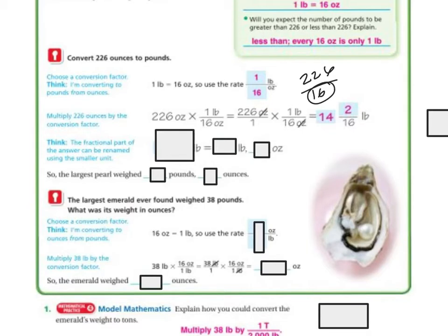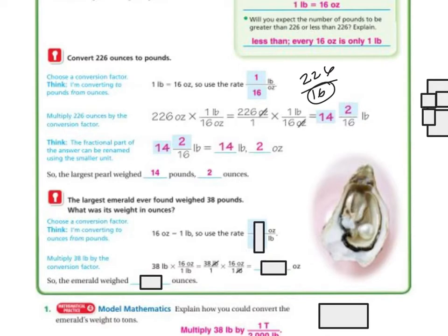Then I'm going to think: the fractional part of the answer can be renamed using smaller units because 2/16 can be reduced. So if I have 14 and 2/16, I keep my 14, but 2/16 can be reduced to 2 ounces. So the largest pearl weighed 14 pounds and 2 ounces.